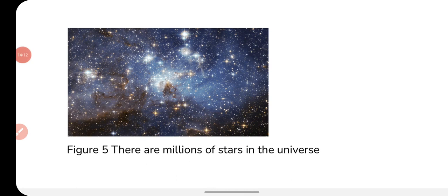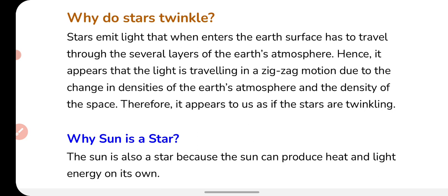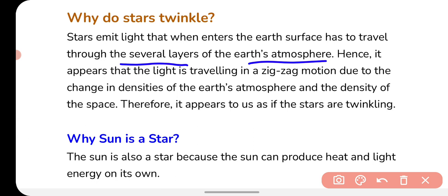If you think about how many stars are there in the universe — you cannot count them. There are countless stars present in our universe. Why do stars twinkle? Because the light emitted by stars enters our earth's atmosphere and has to cross several layers. As the density of atmospheric layers varies — some layers more dense, some less dense — the light changes direction as it passes through, resulting in a zig-zag motion. That is why we see stars twinkling.